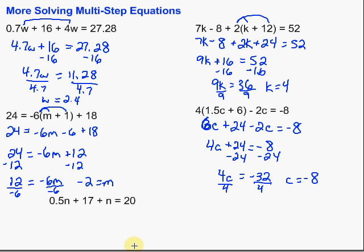Finally, down here, there are no parentheses, so we won't need to use the distributive property — but we do have some terms we can combine. We've got an n term here and an n term here: 0.5n and just n. Remember, if there's no coefficient, it's just 1. So there's 1n there. 1 plus 0.5 gives us 1.5n plus 17.